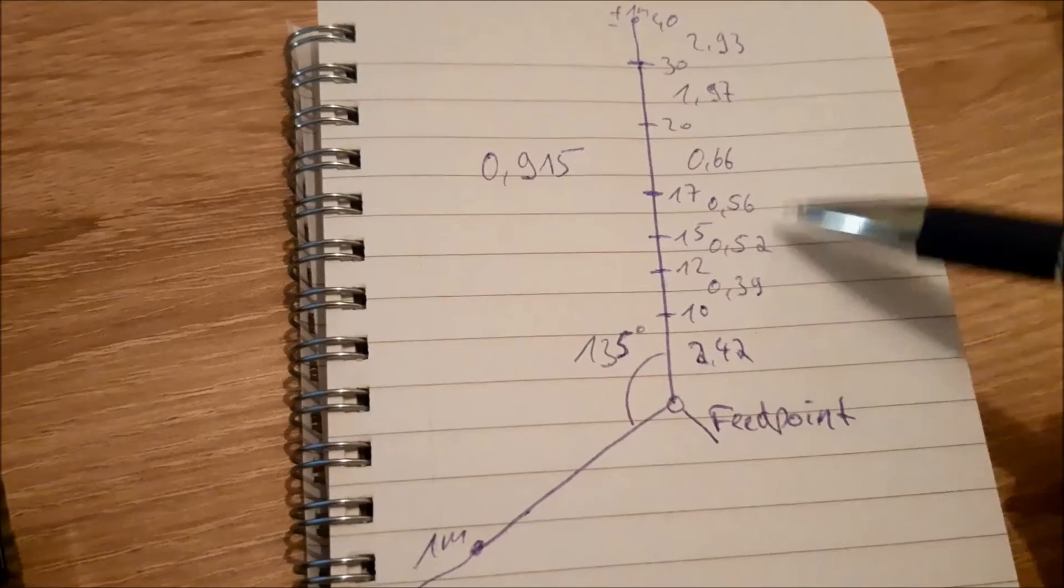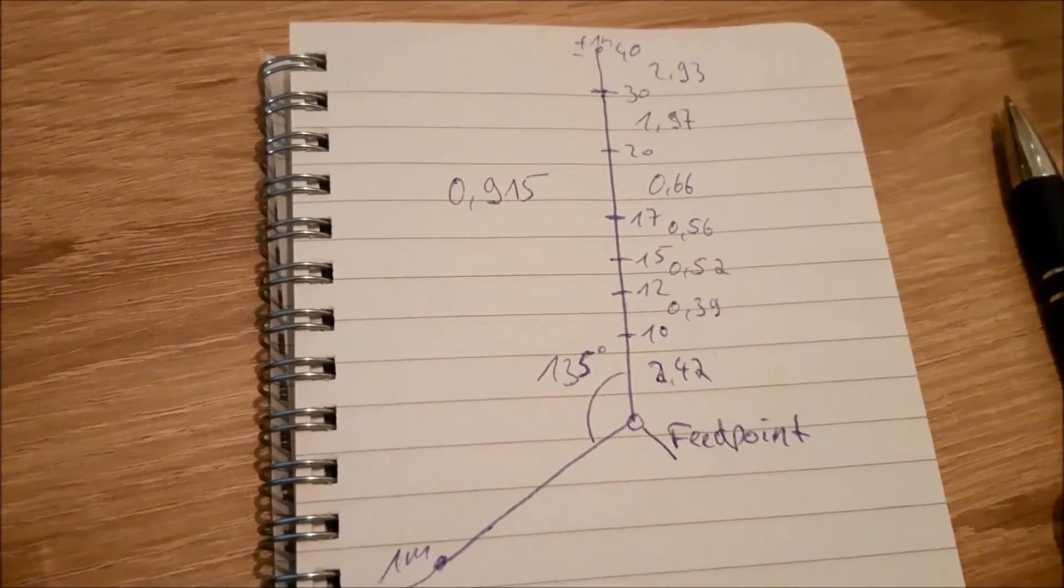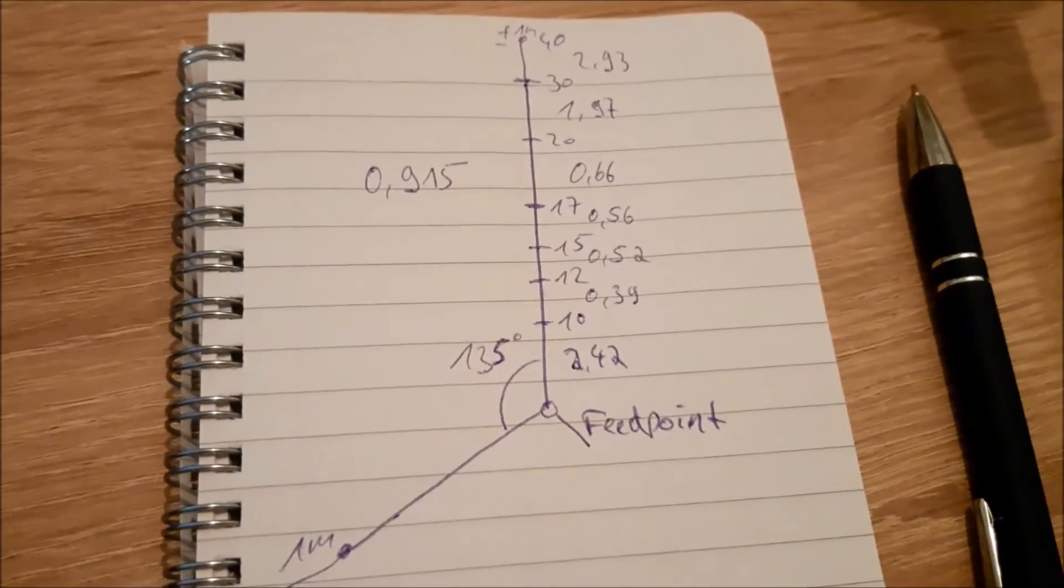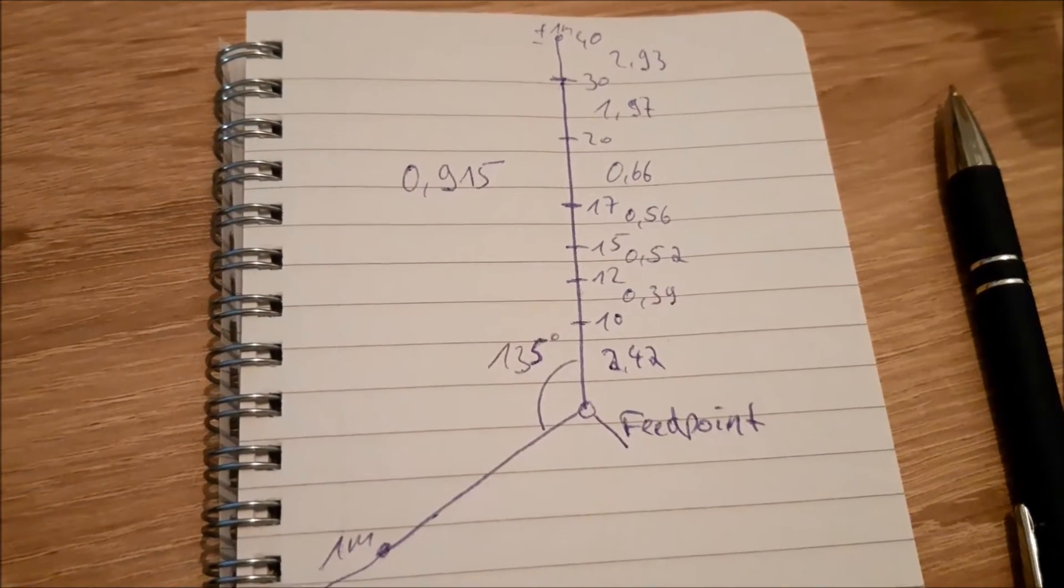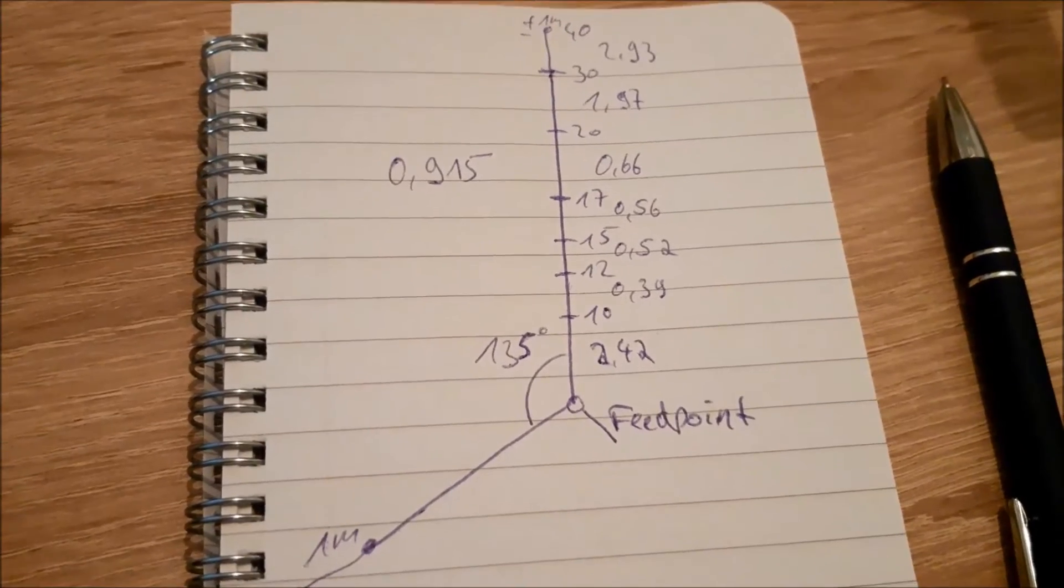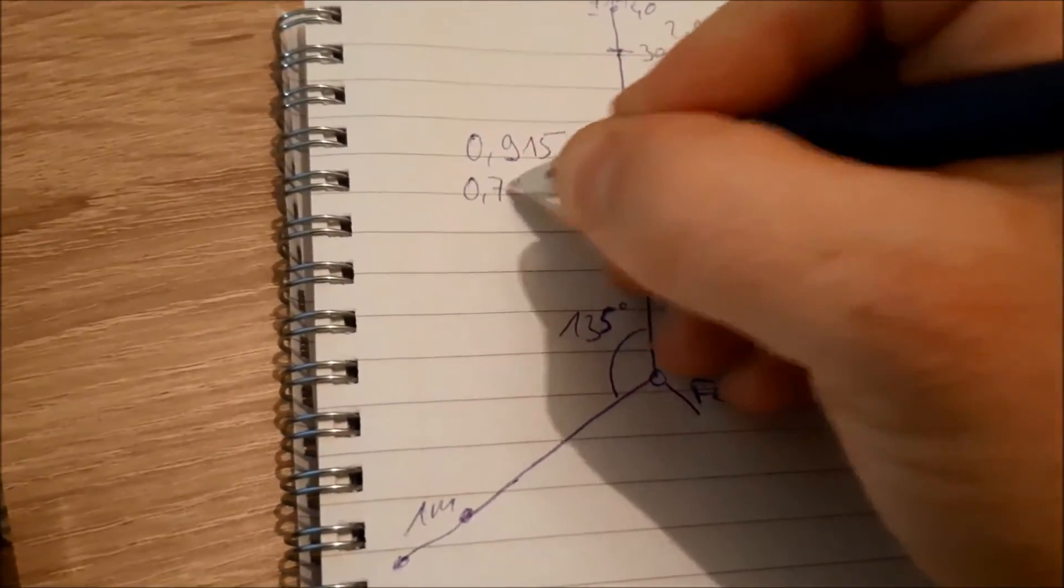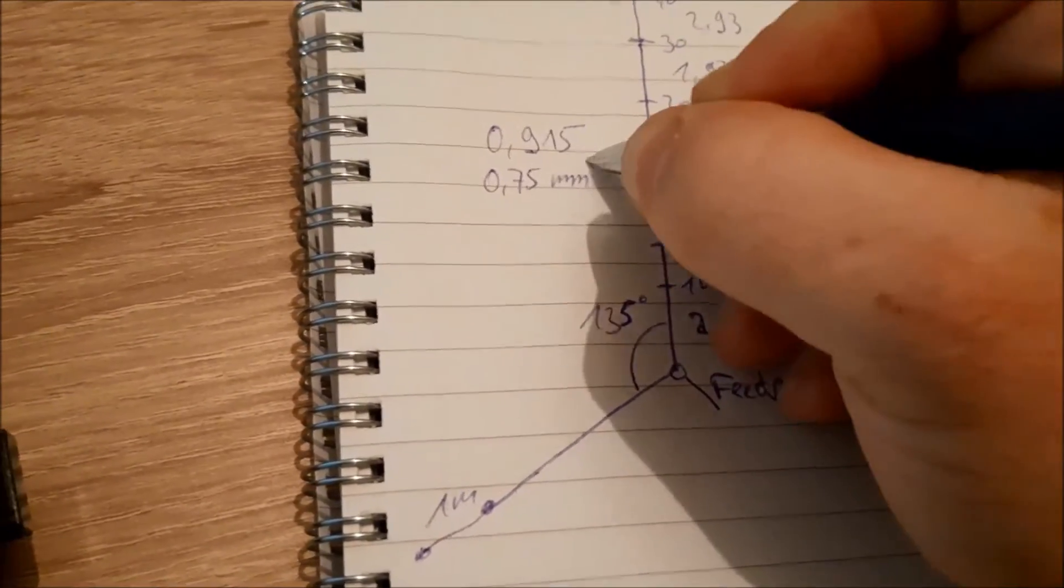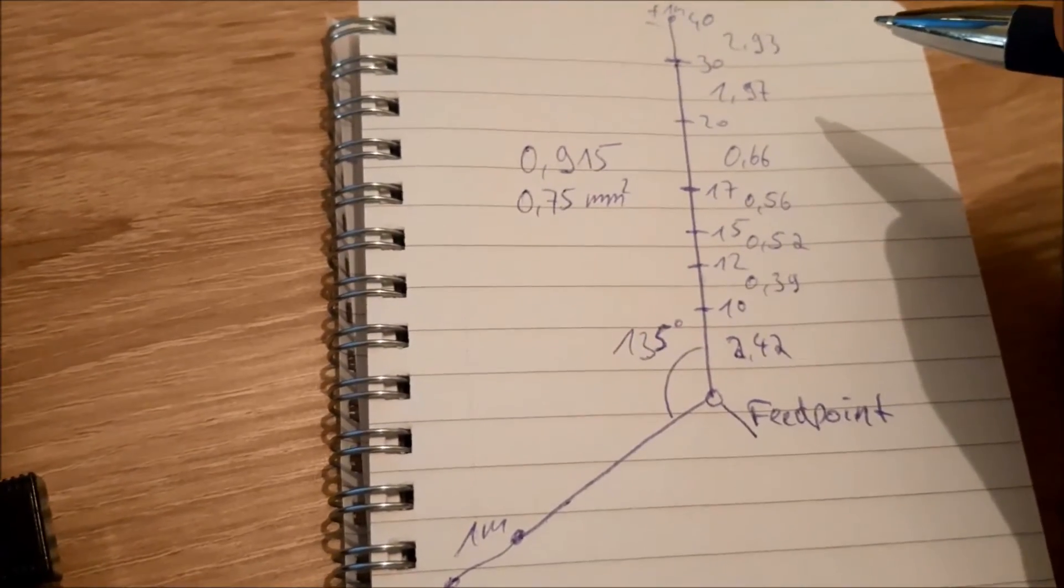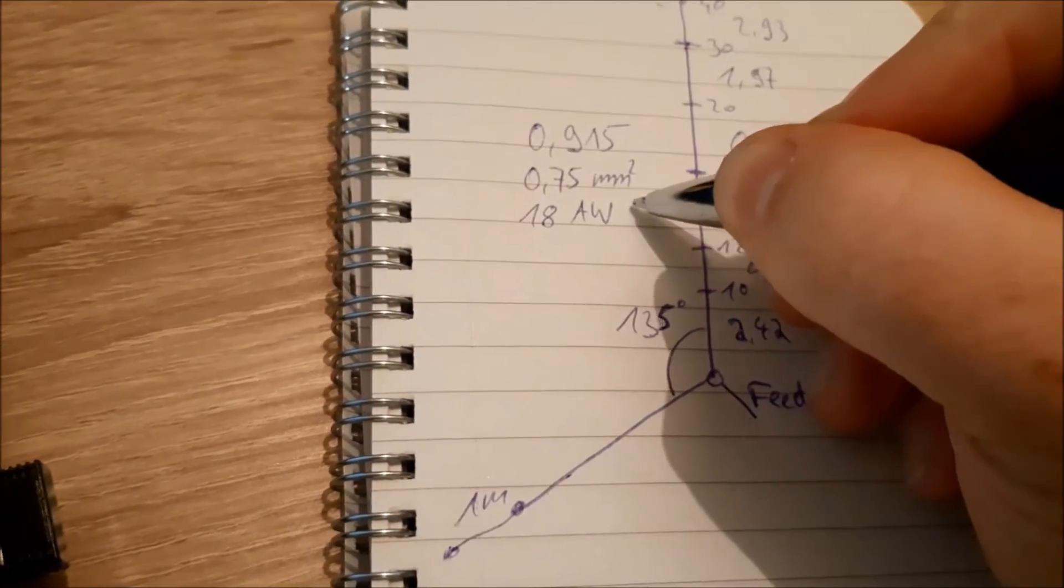If you build it 100% like that, I will not guarantee that this antenna will perform at its best. Maybe you have to cut or add something in each band. So you have to try it out. But in my case it was 0.915m with 0.75mm² wire. That's approximately 18 AWG.